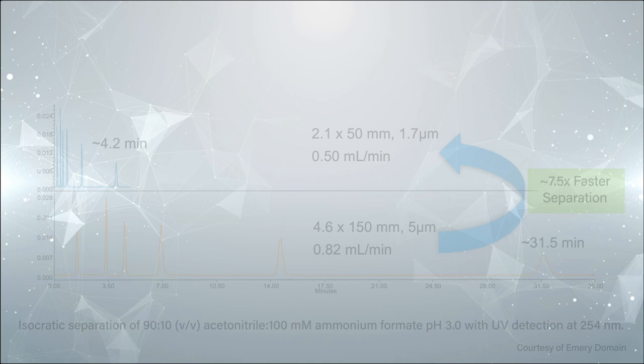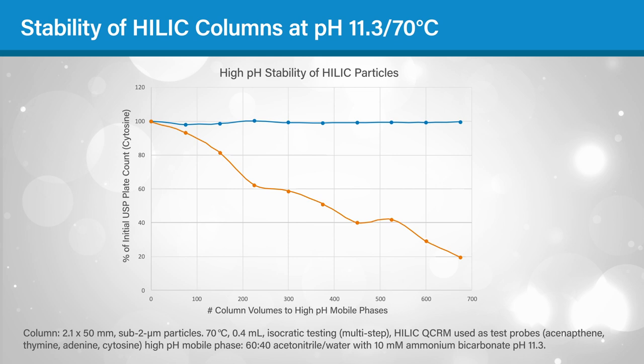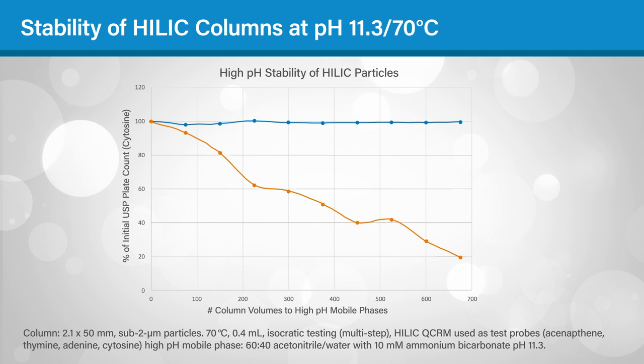Additionally, the pH stability of a stationary phase is very important. Changing the mobile phase pH during column screening can modulate selectivity by altering the charge states of the analytes and potentially the stationary phase. However, not all columns are compatible with high pH mobile phases. Most silica-based materials are not stable above pH 8 because the silica particles begin to dissolve, leading to column voiding and large efficiency losses.